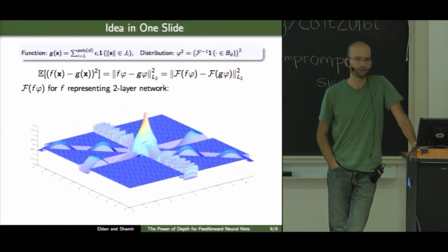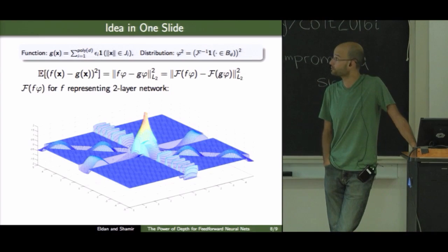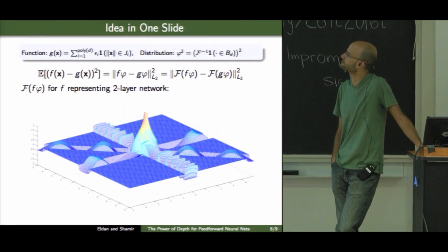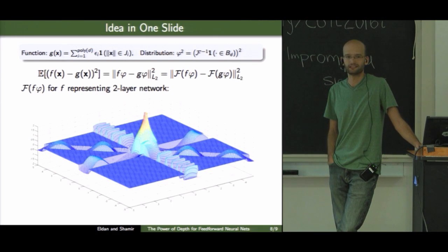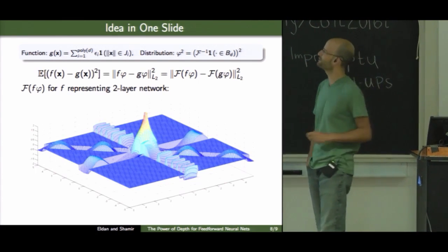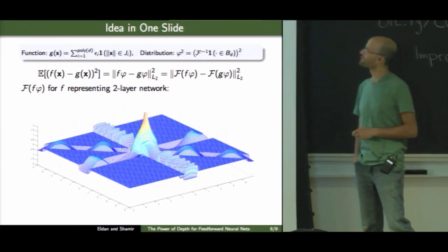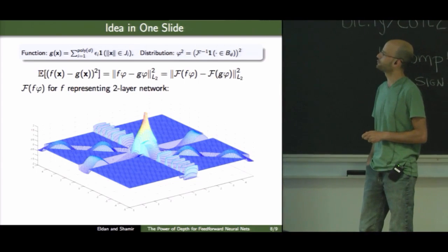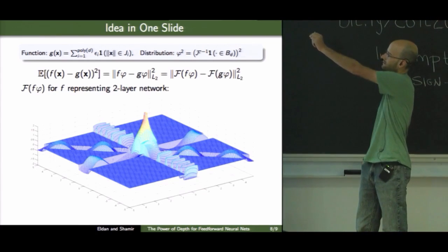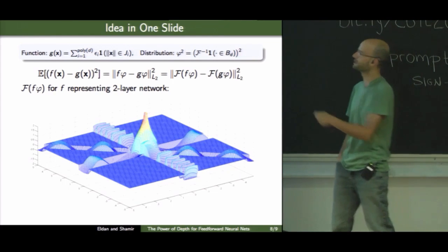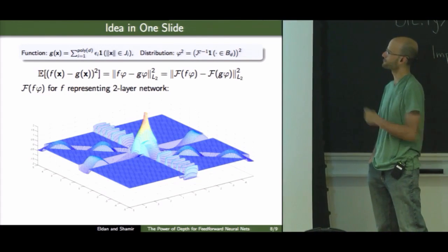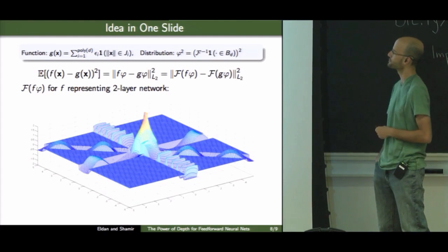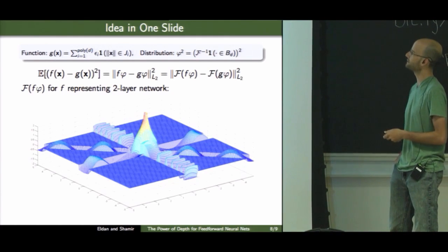So, it goes through a Fourier analysis on R^d. How many people here are familiar with the Fourier transform on R^d? Okay, most of you. So, the basic idea is that we look at the expected squared loss between, say, a two-layer network represented by function f and the target function g.